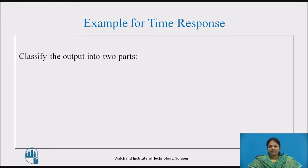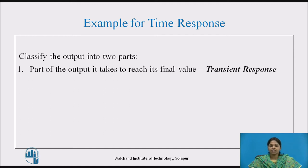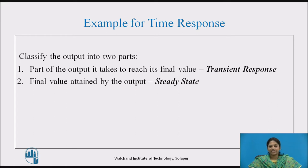Based on this example, we can classify the total output response into two parts. The first is the part of the output during the time it takes to reach its final value, which is called the transient response. The second is the final value attained by the output, which will be near to its desired value if the system is stable and accurate, and this is called the steady state response.